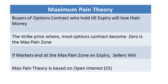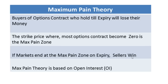If markets end near the pain zone during expiry, the sellers will win — meaning the sellers will take home most of the money and the buyers will lose their money to the sellers.